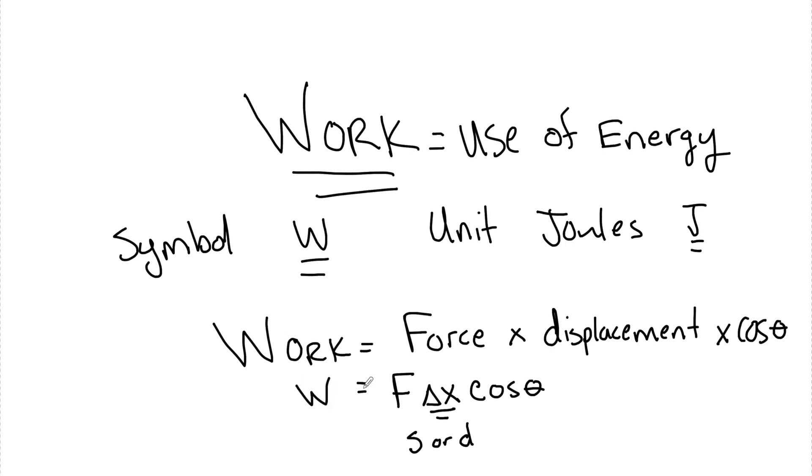You might see it written as maybe S, or maybe you see it written as D, however you use it. But we use delta X on the AP level, and this cosine of theta, that's going to be equal to work. And let's talk exactly what this cosine is, because sometimes you're just going to see it written as work equals Fx. So when do you have to put this cosine in, and when do you not?